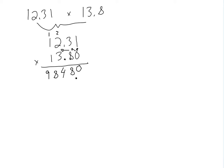For the next row, we always have to add a zero and then start multiplying from the next digit. So now this is the second one — we add one zero. Then we go from the three: three times one is three, three times three is nine, three times two is six, three times one is three.